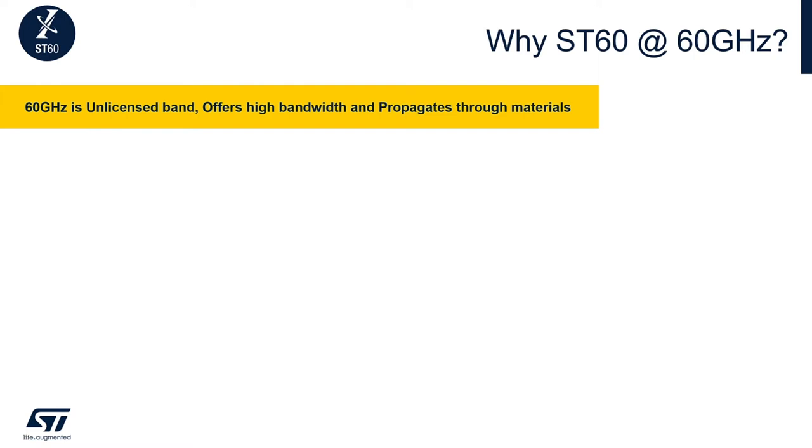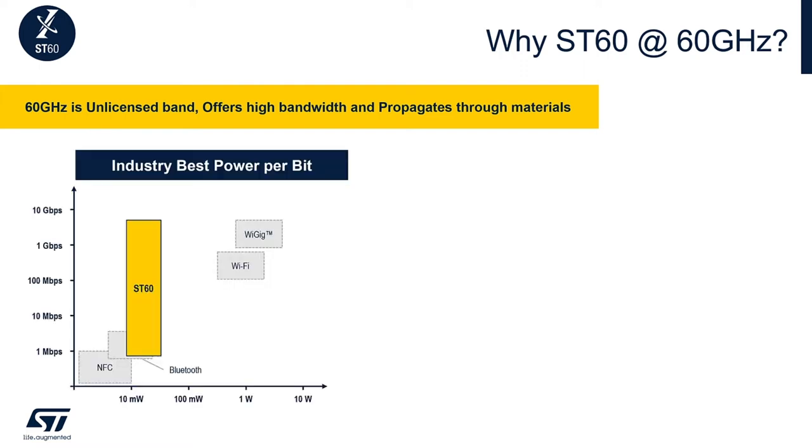It also gets quickly absorbed in air so it doesn't travel too far of a distance, making it secure by nature. For full context, let us look at how ST60 compares with other wireless technologies in the market. The chart shows ST60 has a similar power profile as an NFC or a Bluetooth, but the key differentiator is the high data rates of up to 6 Gbps.